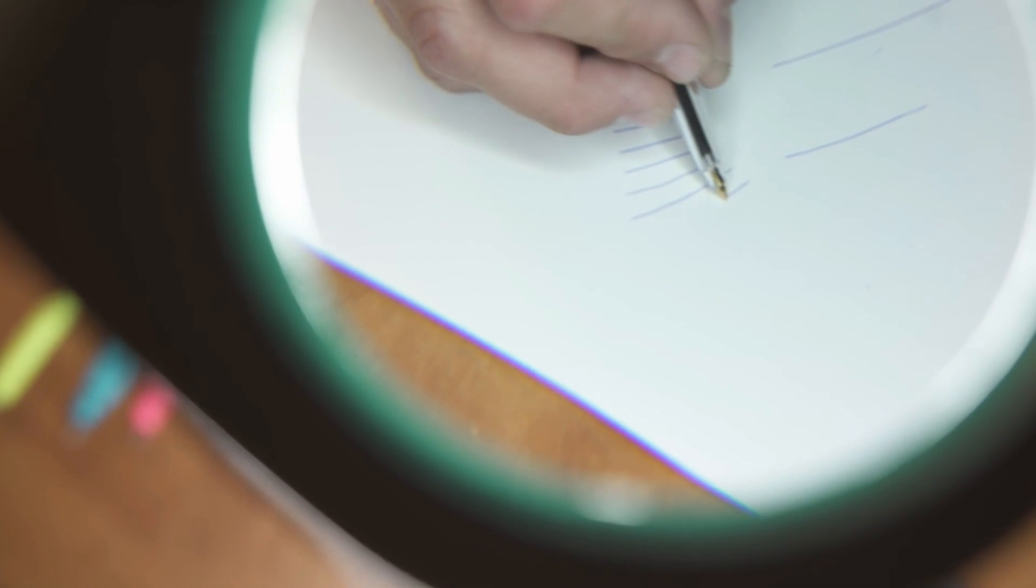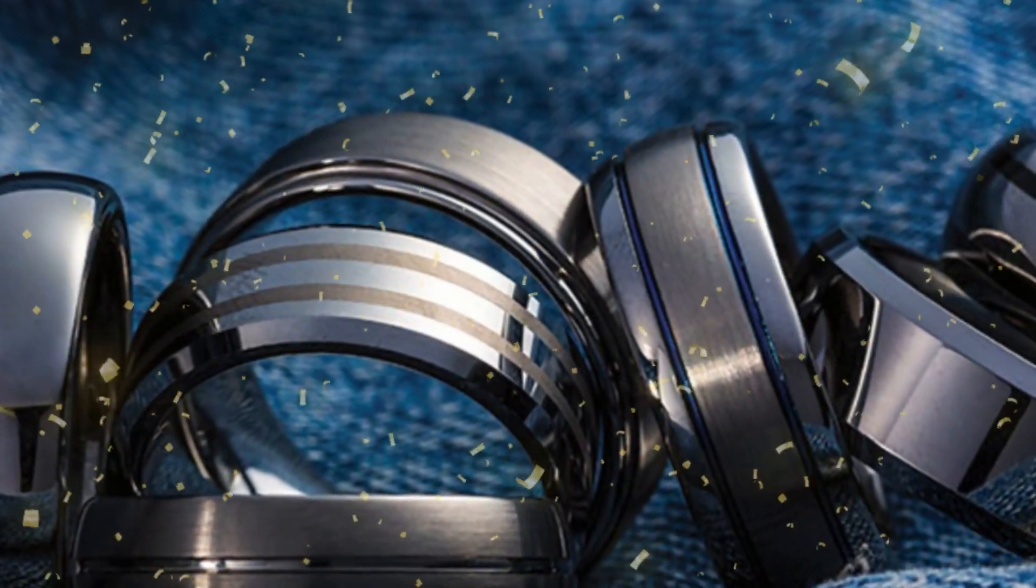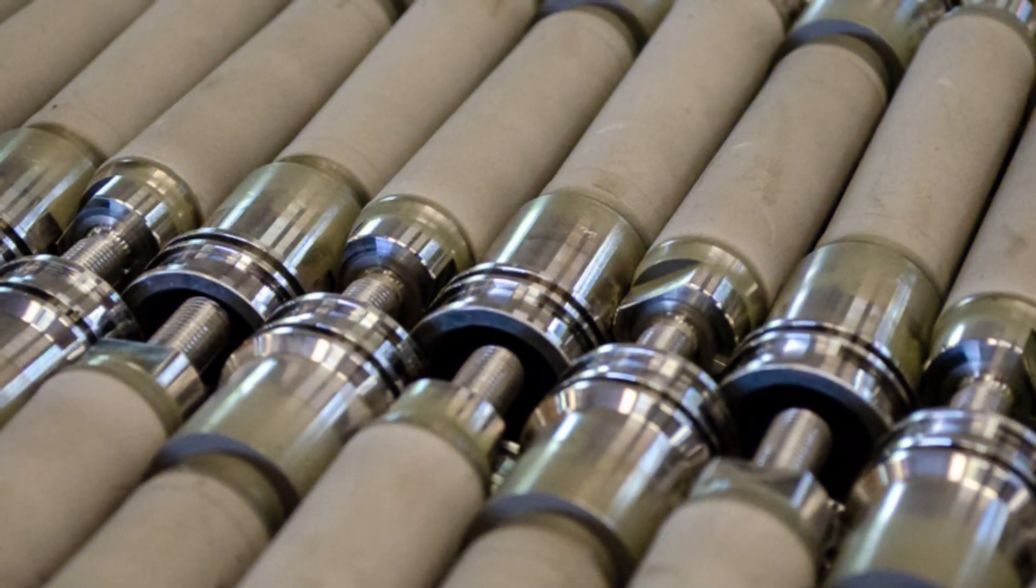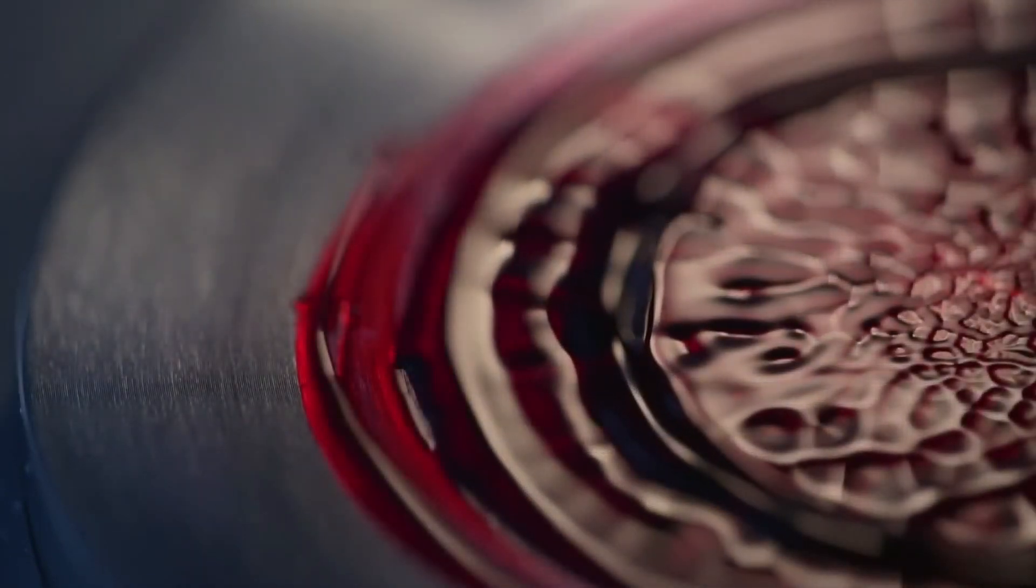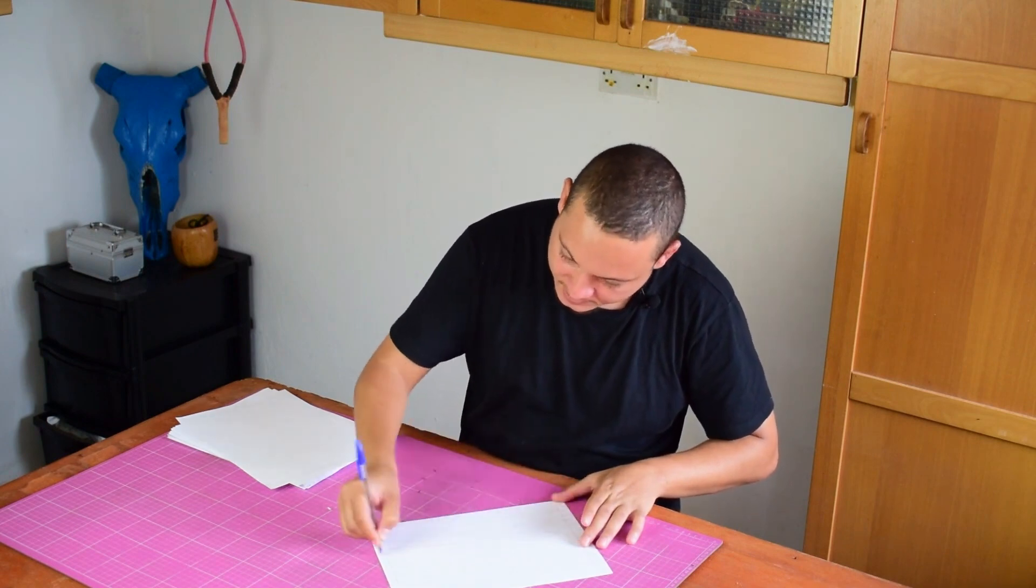Thanks to its toughness, tungsten carbide is not only used to make pen balls, but also in many other fields. The fact that it doesn't scratch makes it useful for digging tools, cutting tools, and even jewelry. This shows off the material's special mix of strength and resistance to wear, which is why it works so well for ballpoint pens that need to be precise.